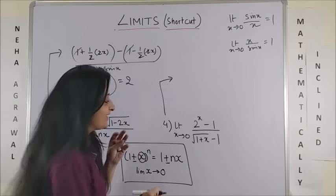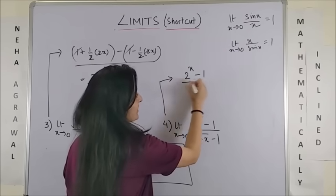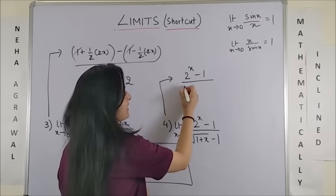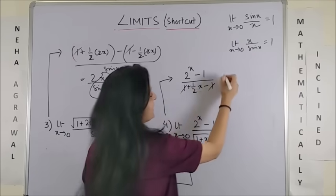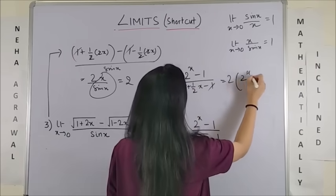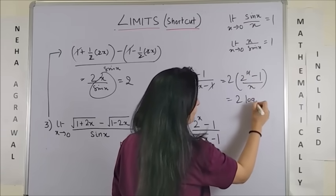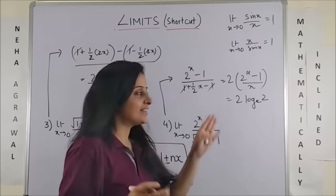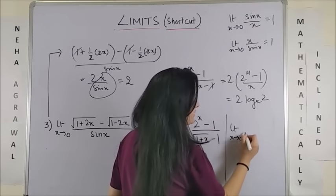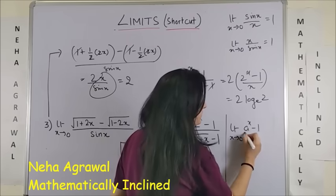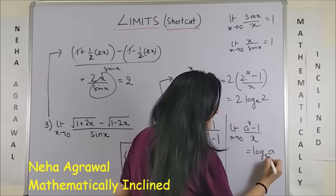Coming to the fourth one, we apply the same logic. This is 2 raised to power x minus 1 as it is. This becomes 1 plus half of x minus 1. These get cancelled. The 2 goes up. It is 2x minus 1 upon x which is simply log 2. The formula that I have used over here is limit x tending to 0 a raised to power x minus 1 by x is log a to the base e.